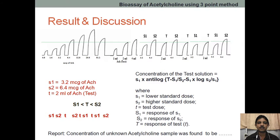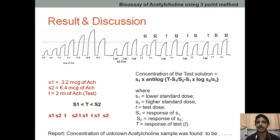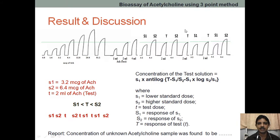Whenever we perform this experiment in a biological assay, the responses may not be the same. For example, for 3.2 we may get 3 mm height, but here it may be 3.1 or 2.9, because biological tissue sensitivity may vary. So the height of this response will differ in all cases — generally we observe differing heights, and it is not always exactly 3 mm or 4 mm for the same response.